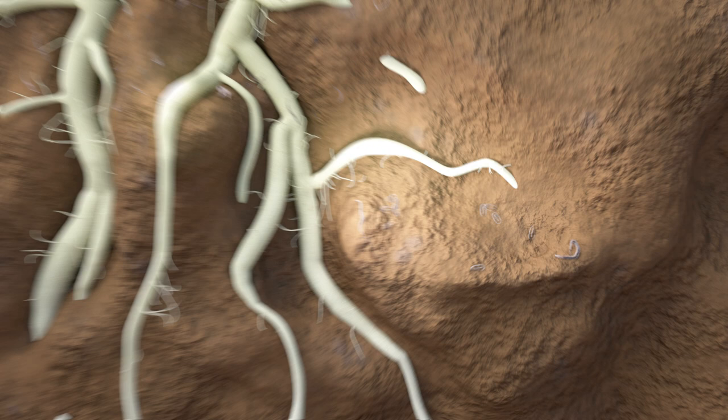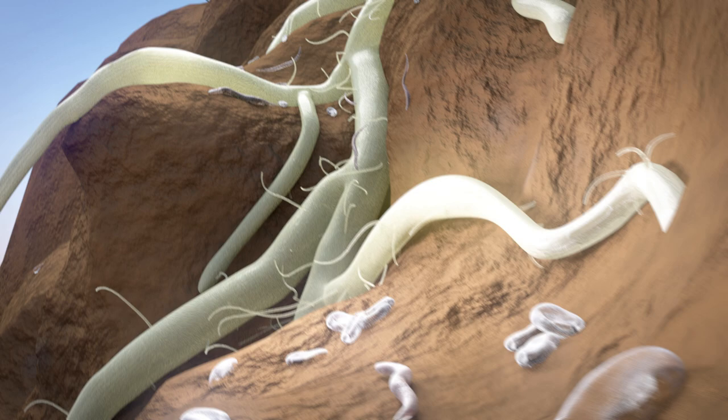Nematodes are responsible for heavy yield and crop losses in fruits and vegetables all over the globe. Tiny eel worms, like the root-knot nematode, live in the soil and the larvae attack plant roots.